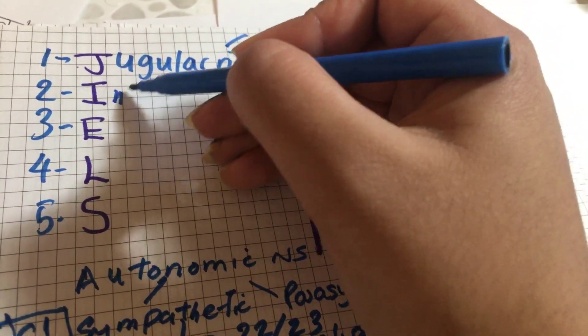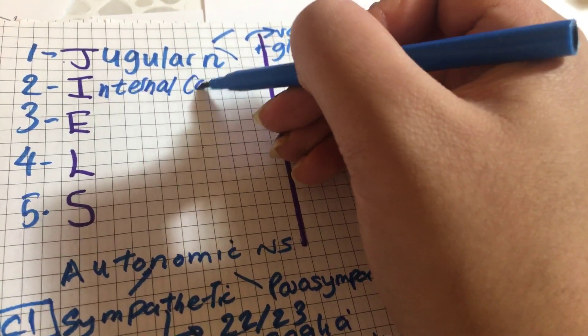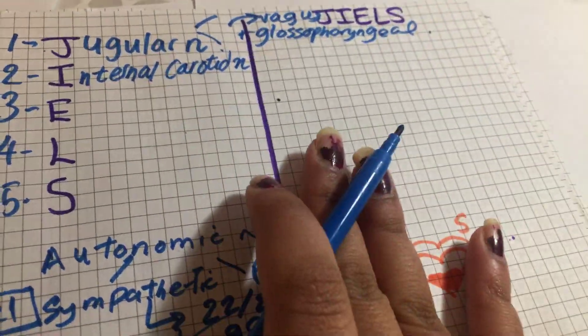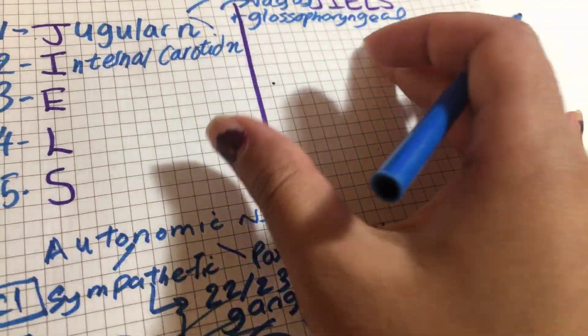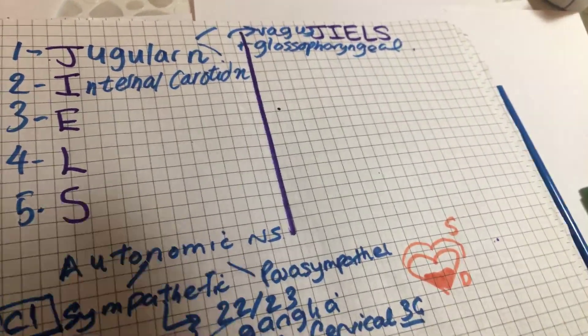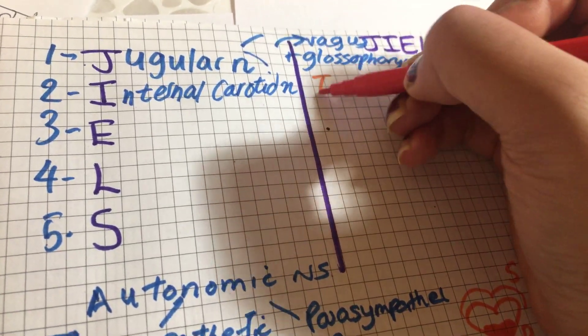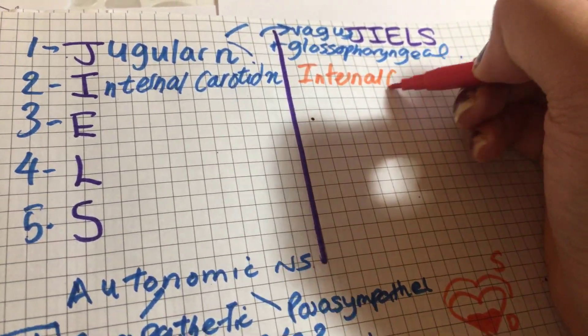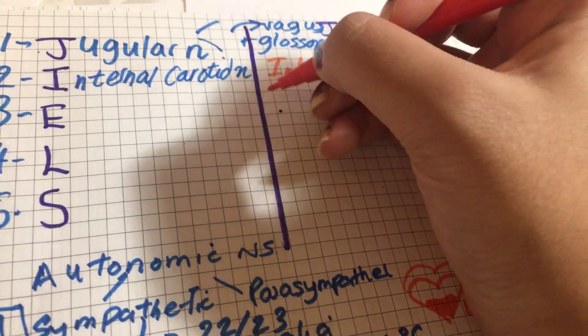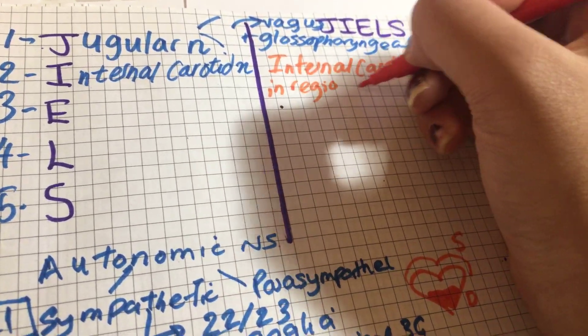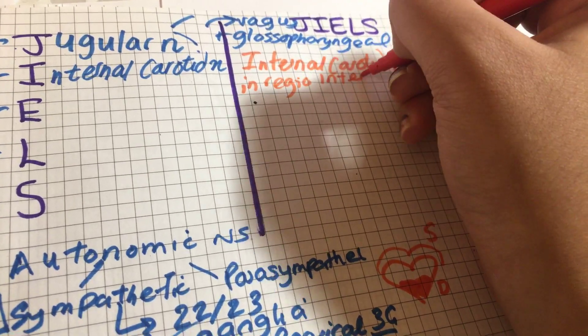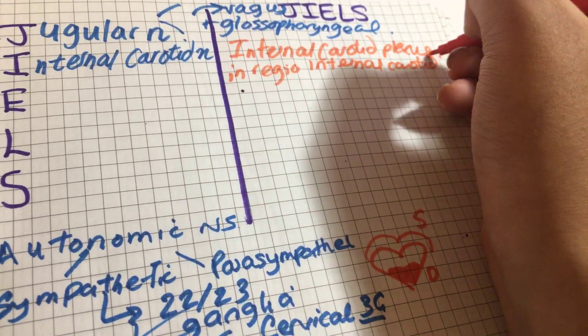The next nerve that we get is the internal carotid nerve. This column is actually for where it's found, in what region, what does it form. The internal carotid nerve actually forms the internal carotid plexus in the region of the internal carotid artery.